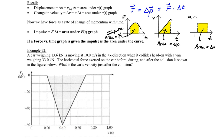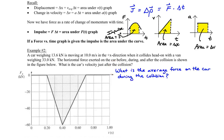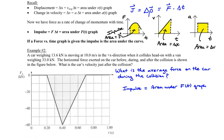Another question one could ask, besides what the car's velocity is just after the collision, is: what is the average force on the car during the collision? To answer that, we would first need to find what the impulse is from the graph. The impulse equals the area under the curve, and the area under this force-time graph is found by calculating the triangular area using one-half times base times height.